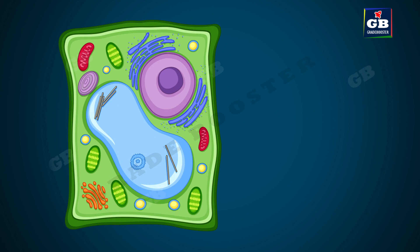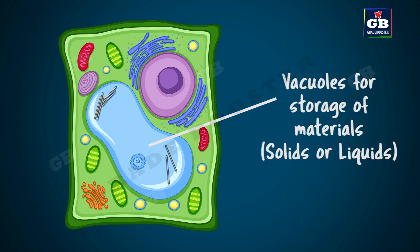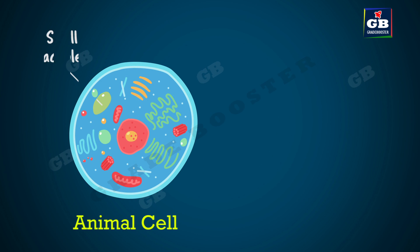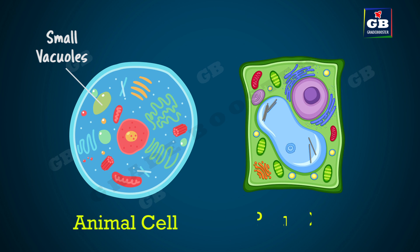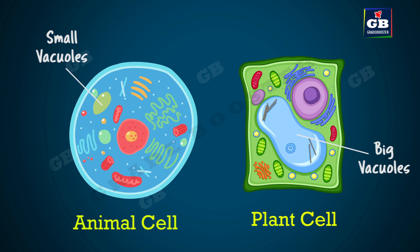Now let us see about vacuoles. Vacuoles are the sacks for storage of materials. Materials in the form of solids or liquids are stored in them. In animal cells, the vacuoles are small in size. Whereas in plant cells, the vacuoles are very big and occupy 50 to 90 percent of the cell volume.